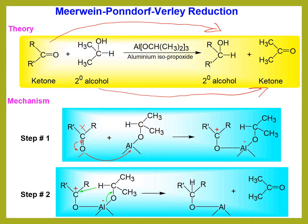After that, the negative oxygen tries to share its excess electrons with the aluminum of aluminum isopropoxide. As we know, the outer shell of aluminum is not filled, so it always has a tendency to attract electrons if they are available. By sharing the excess electrons of oxygen, aluminum forms a bond between oxygen and aluminum, and the charge on aluminum becomes negative.